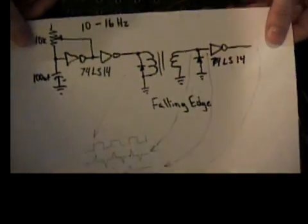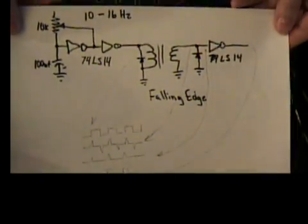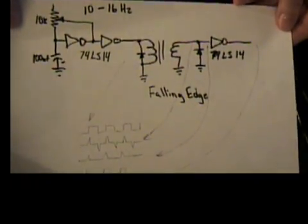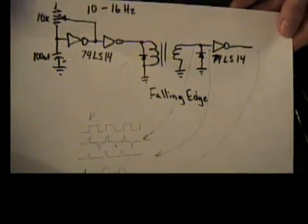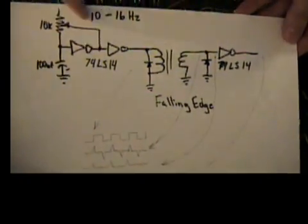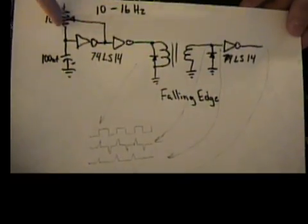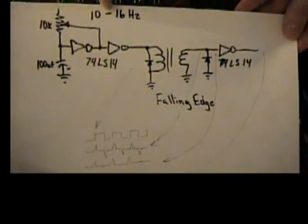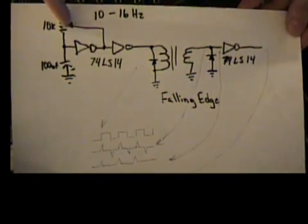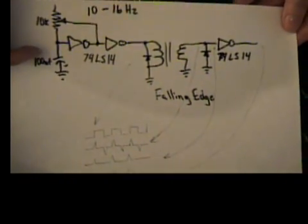This is an example of an edge detector that I thought was very fascinating. This is what they used in the old PDP-1 computers, and this is a sample circuit that I put together. I have an RC inverter oscillator here that's operating in the 10 to 16 hertz range with a variable capacitor and a 100 microfarad capacitor.